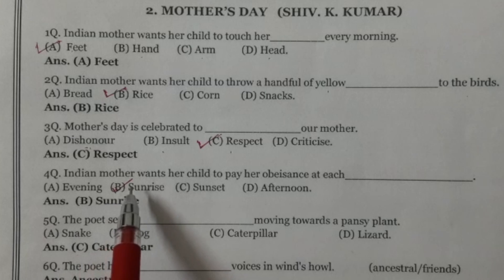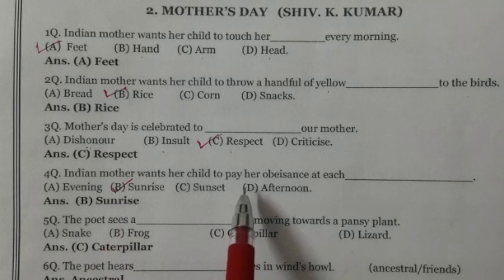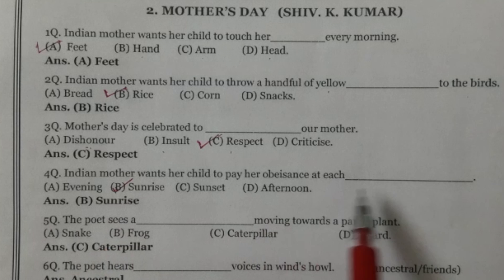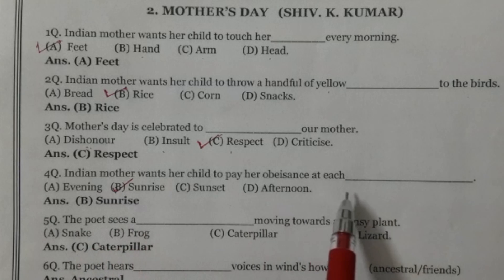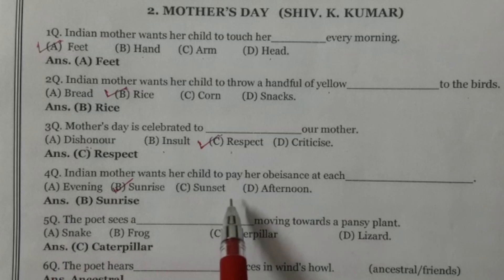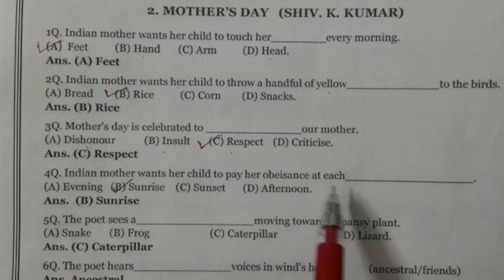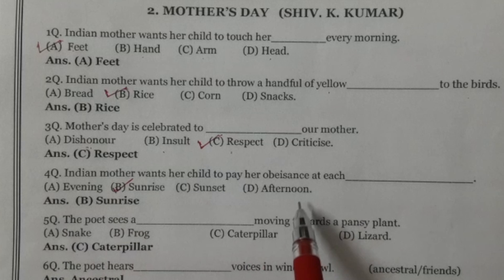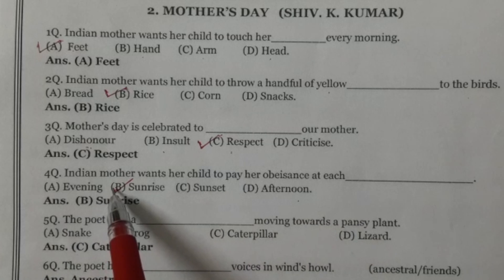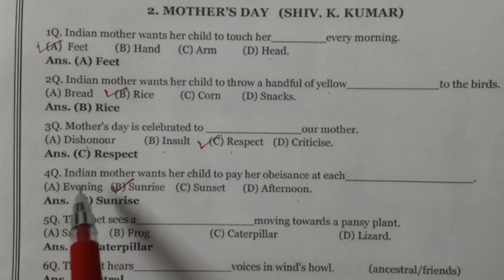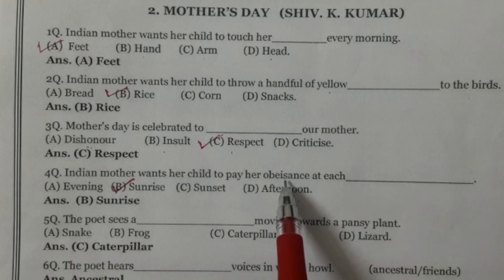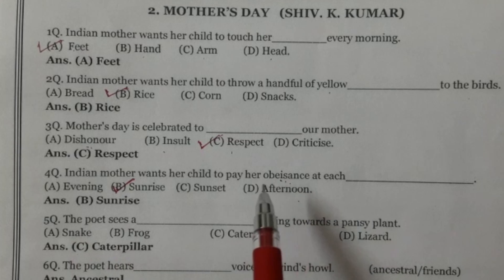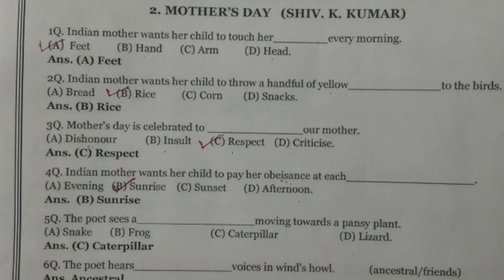Question number 4: Indian mother wants her child to pay her obeisance at each dash. Options: morning, evening, sunset, noon. The right option is sunrise. Indian mother chahti hai ki uska bachcha sunrise wele, sanman de vich, usnun matha tekhe, usnun sanman de aur unni sun de — sanman dena, satkar de vich chukhna.